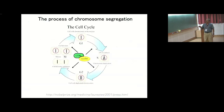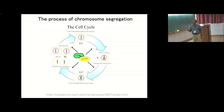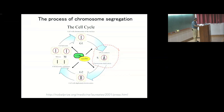The process of chromosome segregation starts from G1, where a cell prepares to replicate its DNA. That happens in S phase, and then there is another preparatory phase for chromosomes to segregate during mitosis. Let me show you a video.